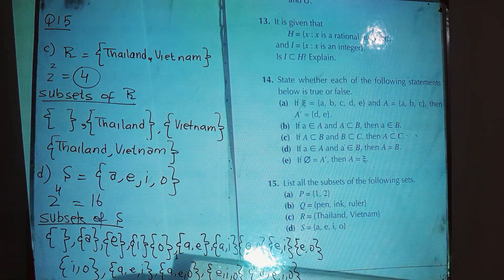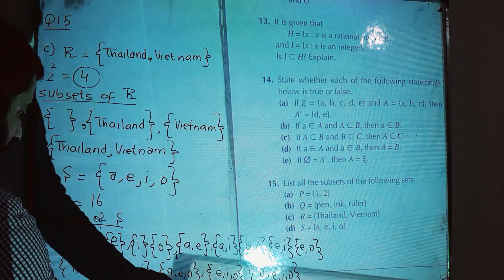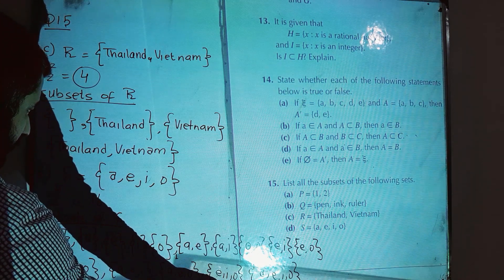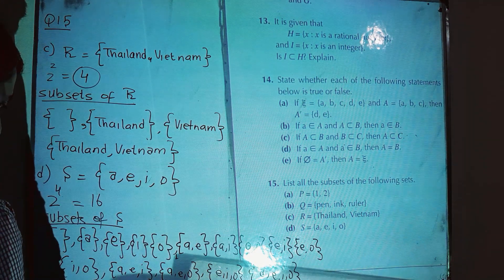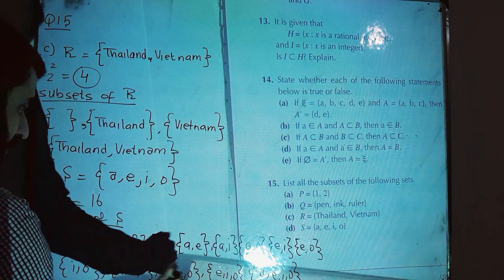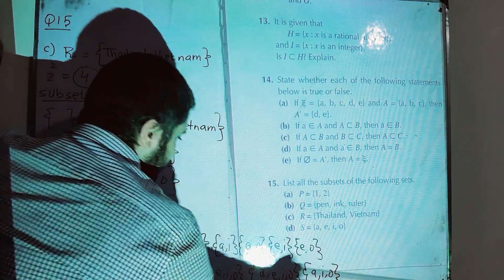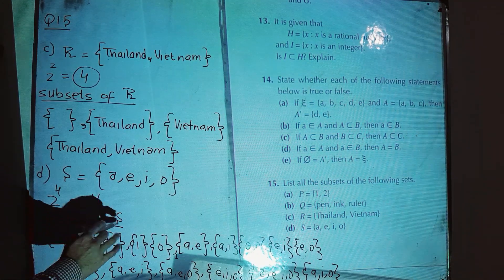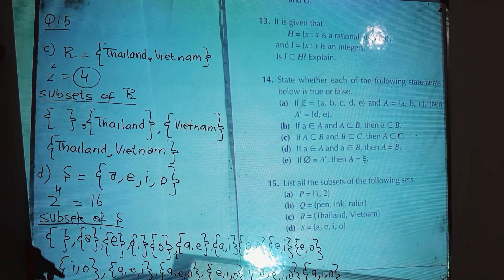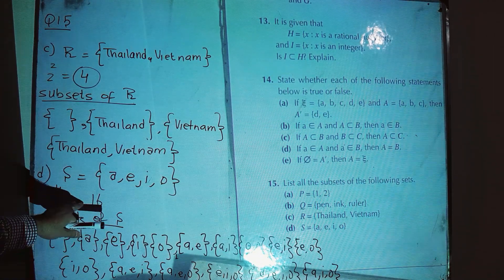We are having one less than sixteen, so checking the three-element subsets: {a, e, i}, {a, e, o}, {e, i, o} — and {a, i, o} is missing! So add {a, i, o}. Now we have sixteen subsets for set S, as derived from the formula two raised to the power four.